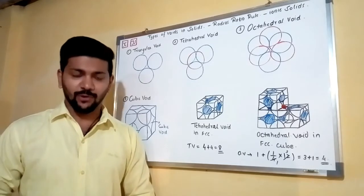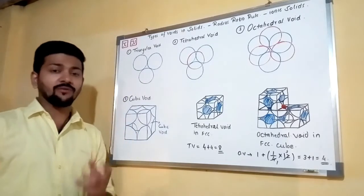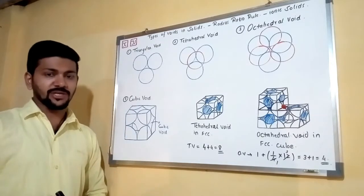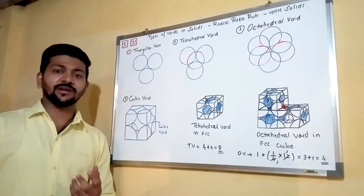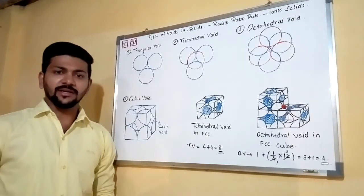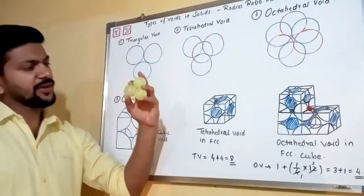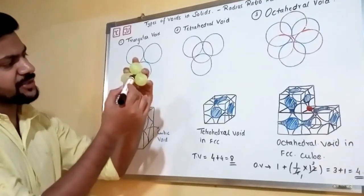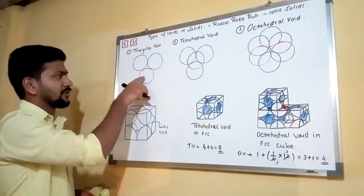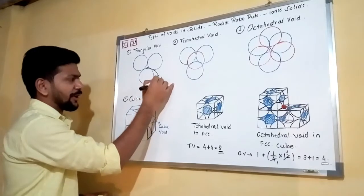Let's start with the types of voids. There are four types: triangular, tetrahedral, octahedral, and cubic. To identify a triangular void, suppose you have atoms arranged in two dimensions. This type of arrangement produces a void at the center which is called a triangular void.